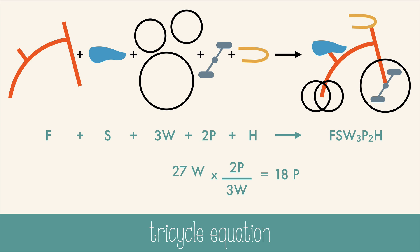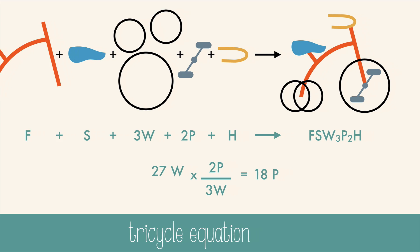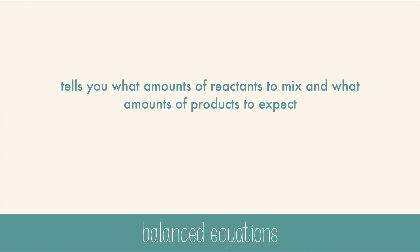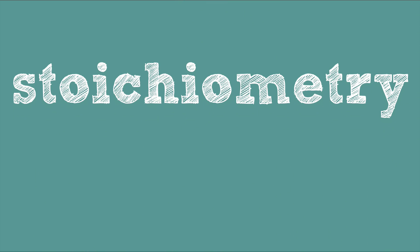Having this balanced equation is really handy. A balanced chemical equation tells you what amounts of reactants to mix and what amounts of products to expect. Now when you need to cut the recipe or double it or do some kind of math with the equation, you're doing something called stoichiometry.